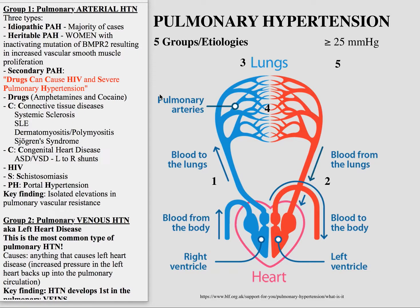The next C is for congenital heart disease, including ASDs and VSDs. In general, you have a left-to-right shunt, which causes increased volume in the right heart, and over time that results in pulmonary hypertension. A high-yield fact: when pulmonary hypertension develops over time because of this increased volume in the right heart, you can have Eisenmenger syndrome, where the pressure of the right heart becomes so high that blood actually shunts from right to left, bypassing the pulmonary circulation and resulting in cyanosis.